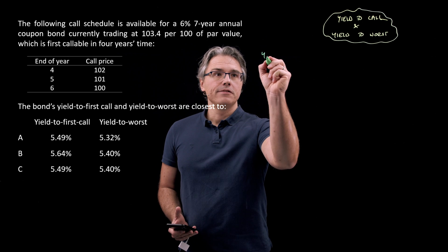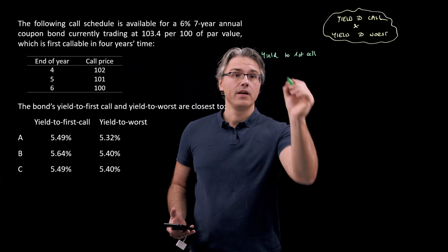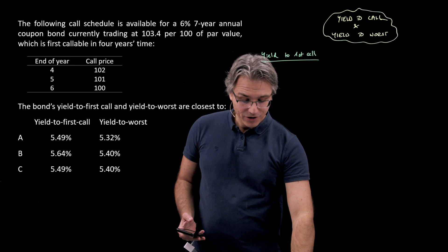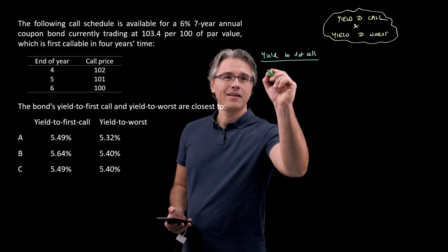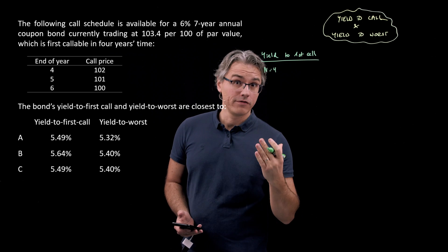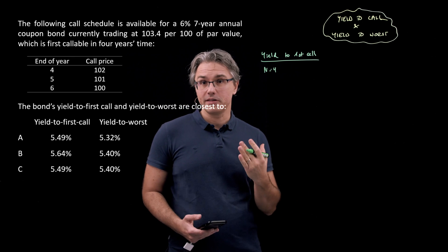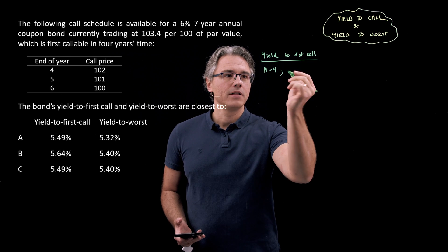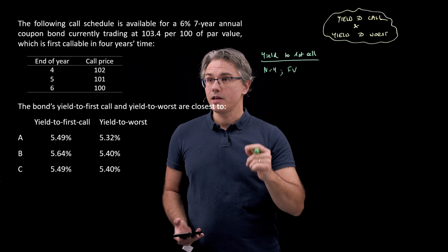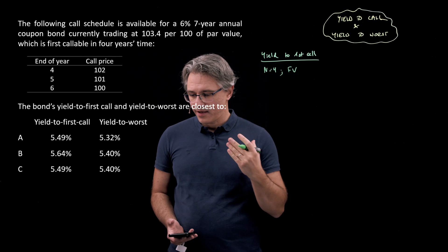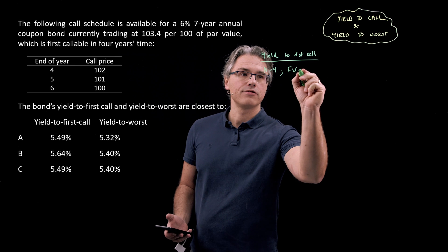Okay, let's start with the yield to first call which we were asked about in the question. We're going to use the time value of money worksheet on our calculators, but this time for N we will be plugging in the number of years equal to four, because the end of the fourth year is the first time when the bond may be called. Other than that we'll have the classic set of parameters, but FV, very importantly, the future value is going to be set at the call price at the end of the fourth year, which as we can see is 102.